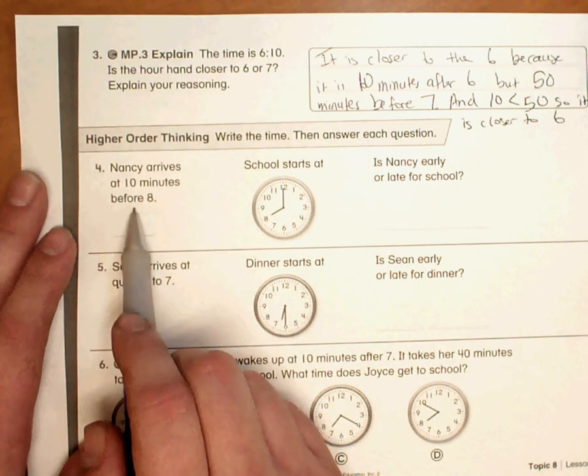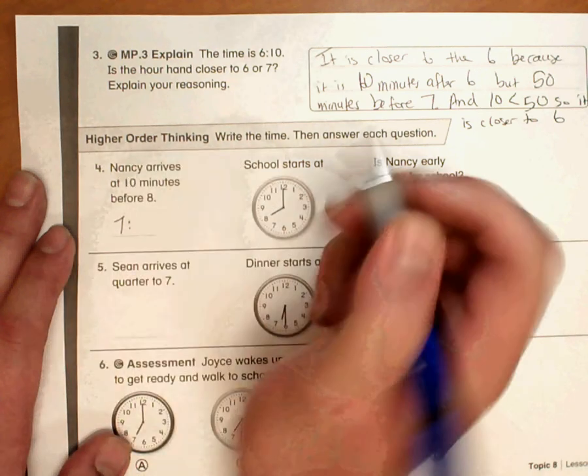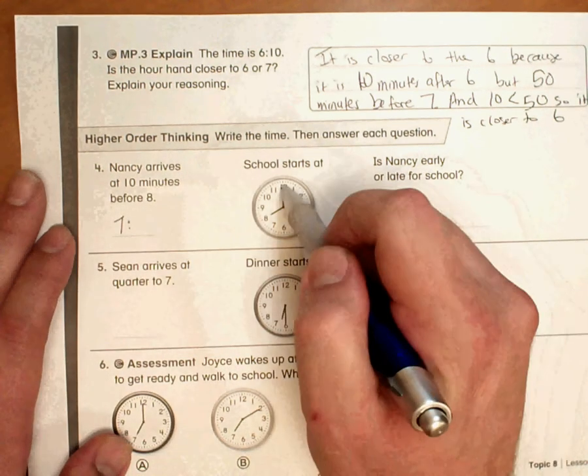So if it's before 8, then we know that the hour is 7. If it's 10 minutes before 8, looking at the clock here,